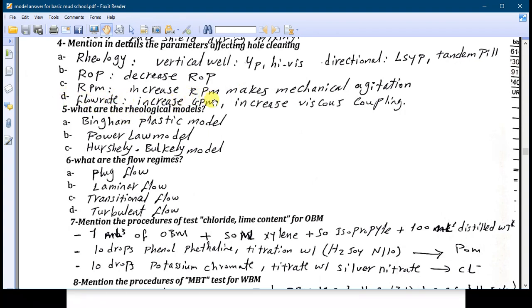Also the flow rate: if you increase the GPM it will increase the viscous coupling and it will increase the annular velocity and it leads to make good hole cleaning. Also increasing the number of bottoms up makes good hole cleaning. So there are five types: the rheology, the ROP, the RPM, the flow rate, and the bottom up.